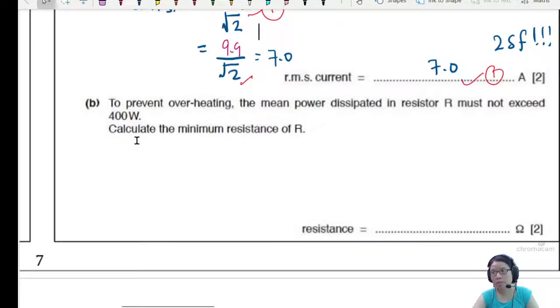And finally, for part B, to prevent overheating, mean power or average power dissipated in the resistor R must not exceed 400 Watt. Calculate the minimum resistance of R. So for this question, since we are talking about mean power, we could say, oh, mean power, we will take the root mean square values.